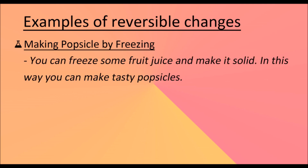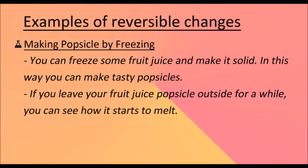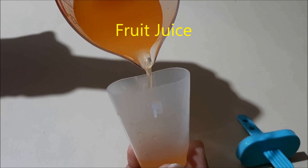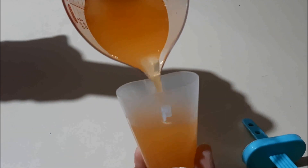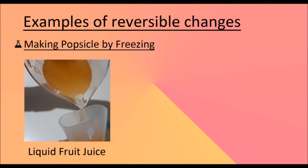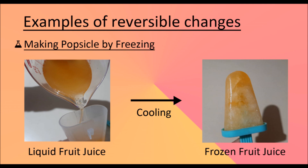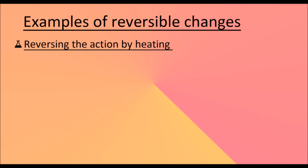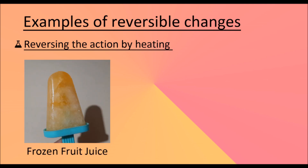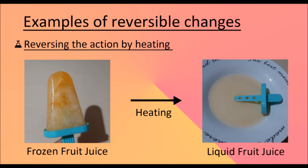You can freeze some fruit juice and make it solid — in this way you can make tasty popsicles. If you leave your fruit juice popsicle outside for a while, you can see how it starts to melt. Liquid fruit juice is cooled to frozen fruit juice; reversing the action by heating turns it back into liquid fruit juice.